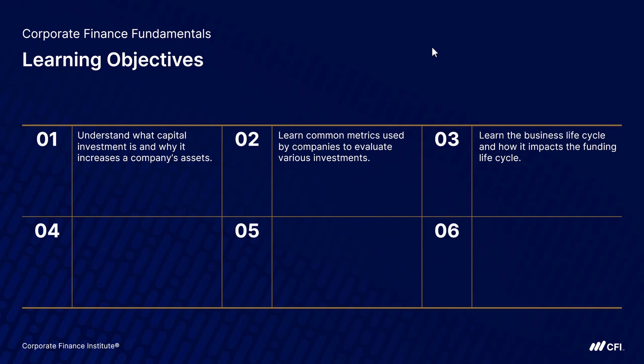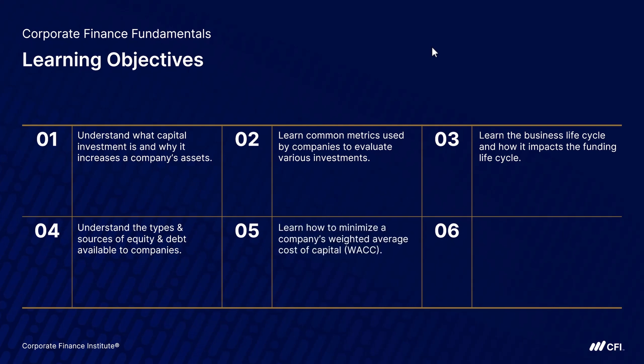When we talk about capital financing, we need to understand the different types and sources of equity and debt that are available to companies. Then we're going to utilize the right mix of debt and equity in order to minimize the company's weighted average cost of capital, or WACC. And finally, for situations where the company cannot find adequate investments or has excess capital available, we're going to look at the advantages and disadvantages of the various ways that a company can return capital to shareholders.